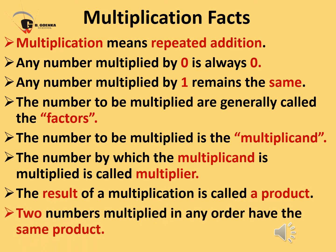Before moving on to the sums, let us recapitulate some multiplication facts. Multiplication means repeated addition — repeated addition is when we add the same number again and again to get the required number. Any number multiplied by zero is always zero, and any number multiplied by one remains the same.